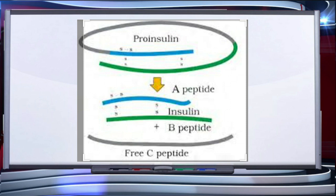In mammals, insulin is synthesized as a pro-hormone, which contains an extra stretch called the C-peptide. The C-peptide is not present in the mature insulin and is removed during maturation. Thus, the main challenge for the production of insulin using recombinant DNA techniques was getting insulin assembled into a mature form, which was accomplished by Eli Lilly in 1983.